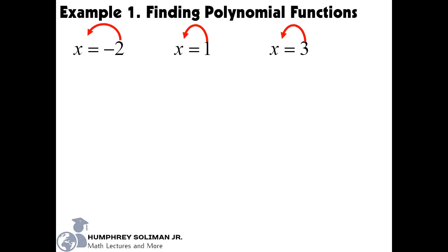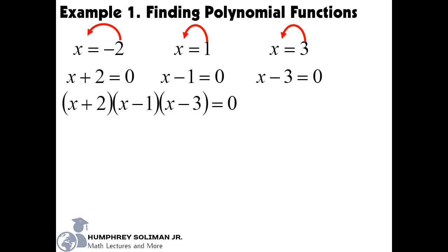In doing so, this changes the sign for each number. And if we multiply all of them together, it will just become 0. Which actually makes sense, because these are the values of x that makes the function f of x equal to 0.